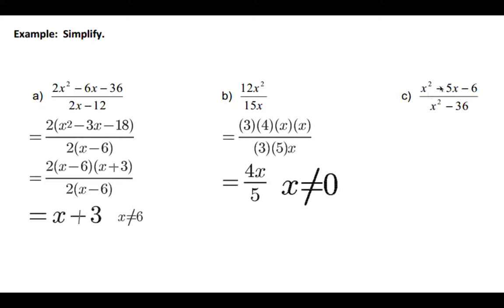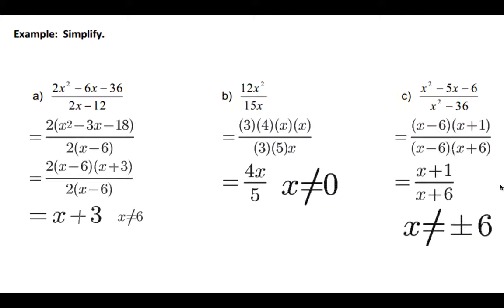The last one here, we can factor the numerator. We've got two brackets, x and x, and minus 6 and plus 1. And the bottom is a difference of squares, x minus 6 and x plus 6. If we cross out the x minus 6s, we're left with x plus 1 over x plus 6. And so then you've got the restrictions where, if you look at the fully factored form, you can state your restrictions from there. x cannot equal 6 here, because that would make a 0 here, or negative 6, because that would make a 0 here. And 0 times anything will give you 0. So negative 6 and positive 6 will make the denominator equal 0.